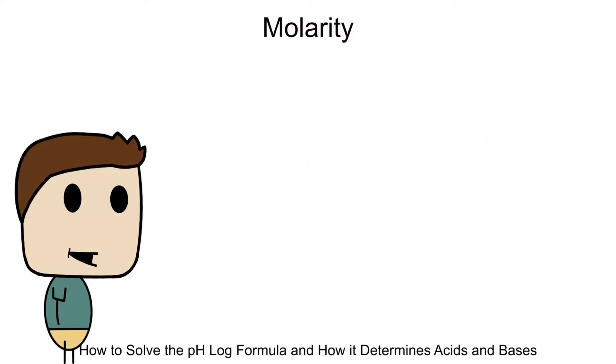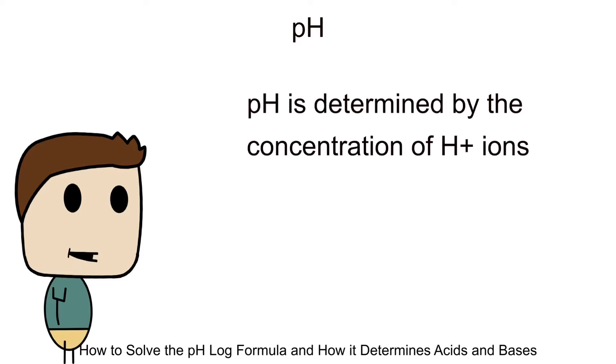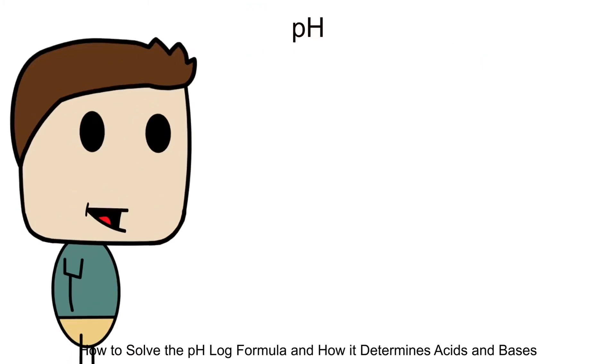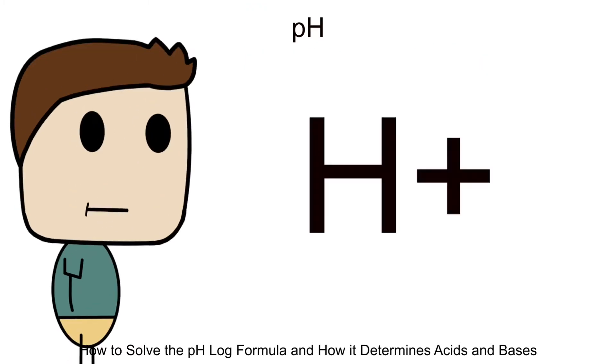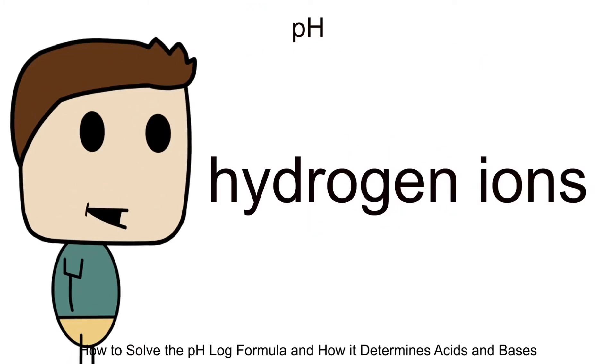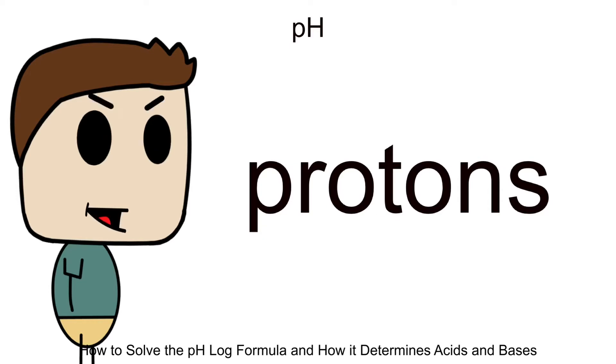This is going to help us better understand pH, because pH is determined by the concentration of H plus ions or hydrogen ions in water. By the way, you're going to hear me say the word H plus, hydrogen ions, protons, these are all the same things, they're interchangeable.